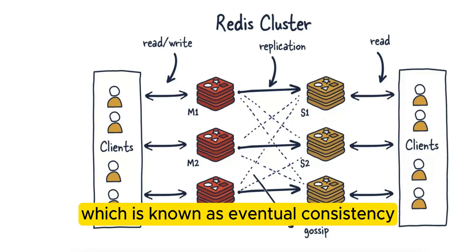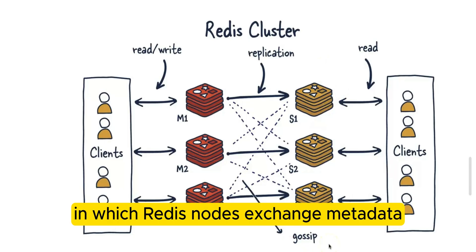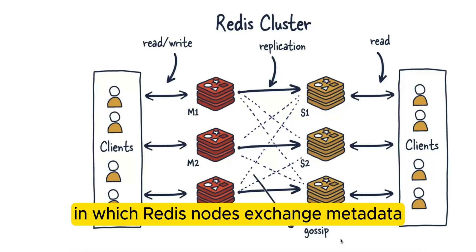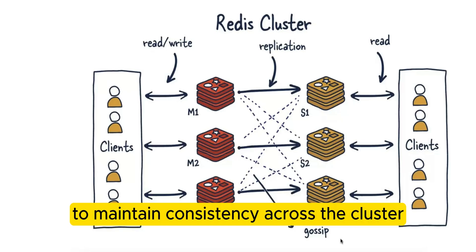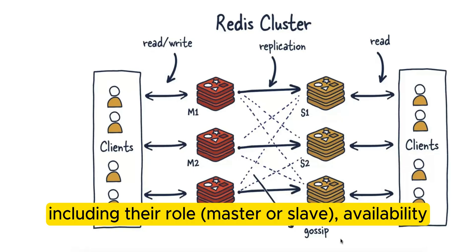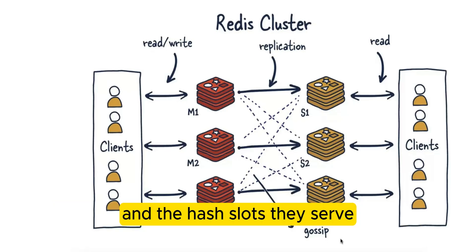Redis cluster uses a gossip protocol, in which Redis nodes exchange metadata to maintain consistency across the cluster. Each node knows the state of every other node, including their role — master or slave — availability, and the hash slots they serve.